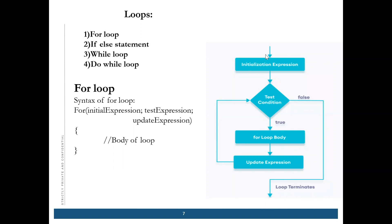What is a for loop? A for loop is when we initialize an expression, test the condition, and if it is true it will enter the loop and continue until that condition is satisfied. If it is false, it will terminate the loop.